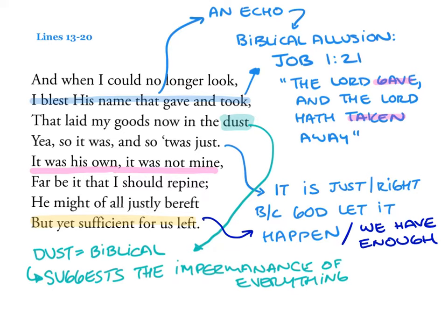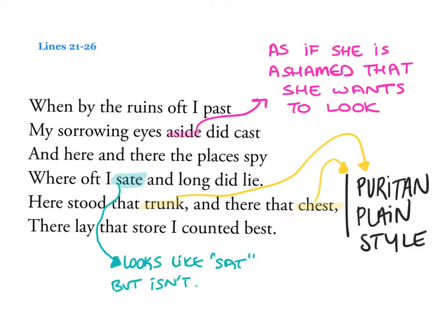'When by the ruins oft I passed, my sorrowing eyes aside to cast, and here and there the place to spy where oft I sate and long did lie. Here stood that trunk, and there that chest, there lay that store I counted best.' A note on the word 'sate' — this has to deal with being satiated, like where I was eating and living and hanging out. The word 'aside' suggests she's almost ashamed to look back at the ruins, embarrassed that she's indulging in the emotion of looking back at something God let happen. On the Puritan plain style: trunk and chest are simple words describing ordinary household things — she just uses these simple nouns and moves on.